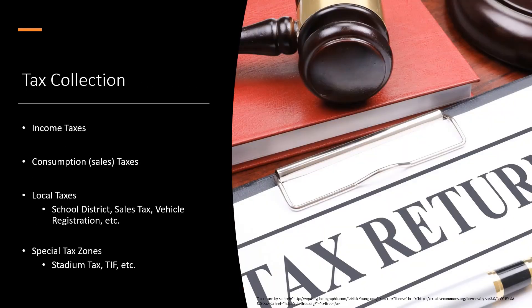The first major piece of the income component of public finance is tax collection. This is one of the major revenue methods for governments of all varieties. These taxes can include income taxes, consumption or sales taxes, as well as a variety of local taxes such as school district, local sales tax, vehicle registration — anything that the government does to bring in revenue. These also include special tax zones such as a stadium tax, a TIF district, or something to that effect, which encourages development but brings in tax dollars towards the government in the long haul.